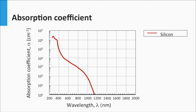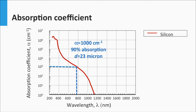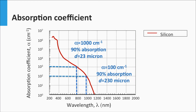Now let's consider the third design rule: light trapping. Looking at a wavelength around 800 nm, crystalline silicon has an absorption coefficient of 1000 per centimeter. Using Lambert's law, to realize 90% absorption of light intensity at 800 nm requires an absorption path length of 23 microns. Around 970 nm, the absorption coefficient is 100 per centimeter, requiring a path length of 230 microns to absorb 90% of all the light — a typical thickness of a silicon wafer. This demonstrates that light trapping techniques become important for crystalline silicon above a wavelength of 900 nm.